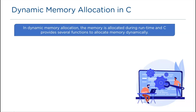To manage memory more efficiently, we use dynamic memory allocation. Unlike static allocation, memory is allocated during runtime and the allocated memory is not constant or fixed. We can allocate memory blocks from the heap whenever required. When a memory block is no longer in use, we can return it to the heap for reuse by another program, and we can also reallocate the block of memory space when required.